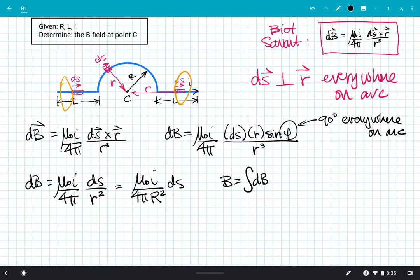If I add up all the dBs, that's going to be—I pull my constant stuff out—so μ₀I over 4πR². And really, I'm adding up all my DSs. That's all I'm really doing. That DS there is just that tiny little piece of arc length, and I'm going to add those up.